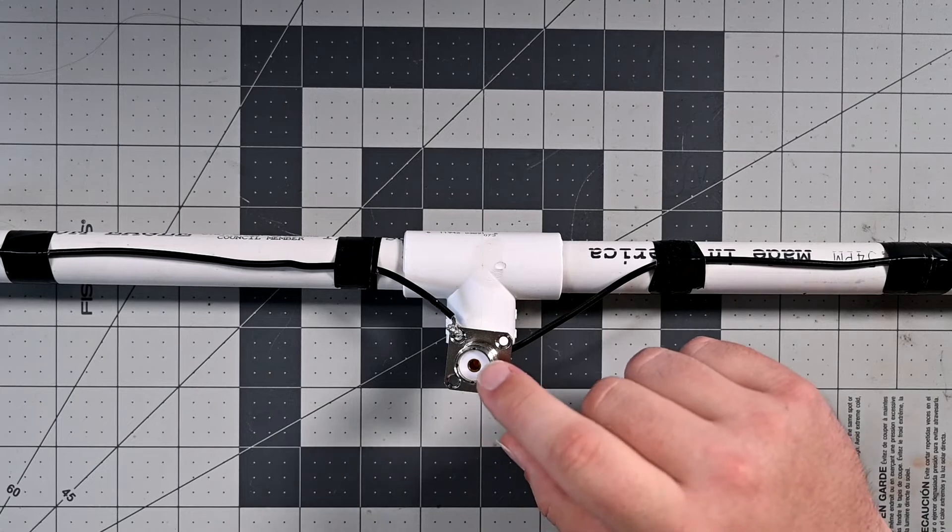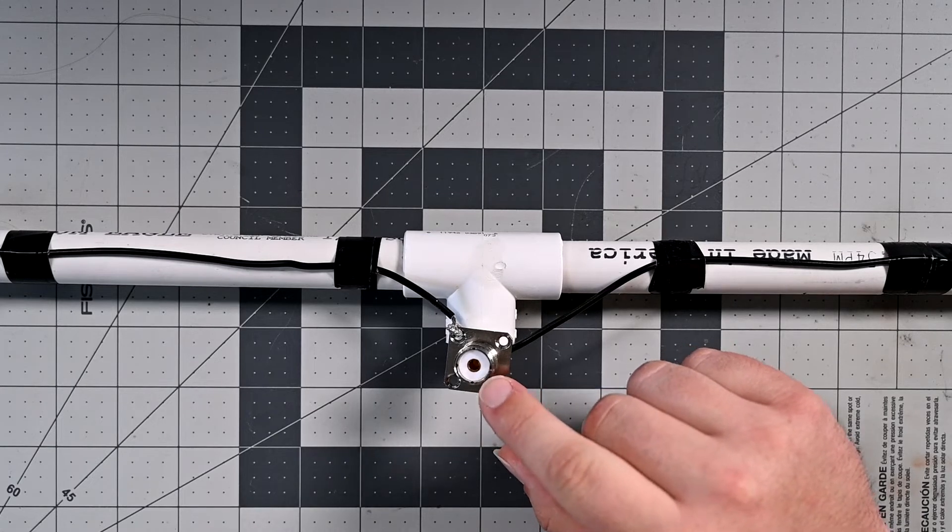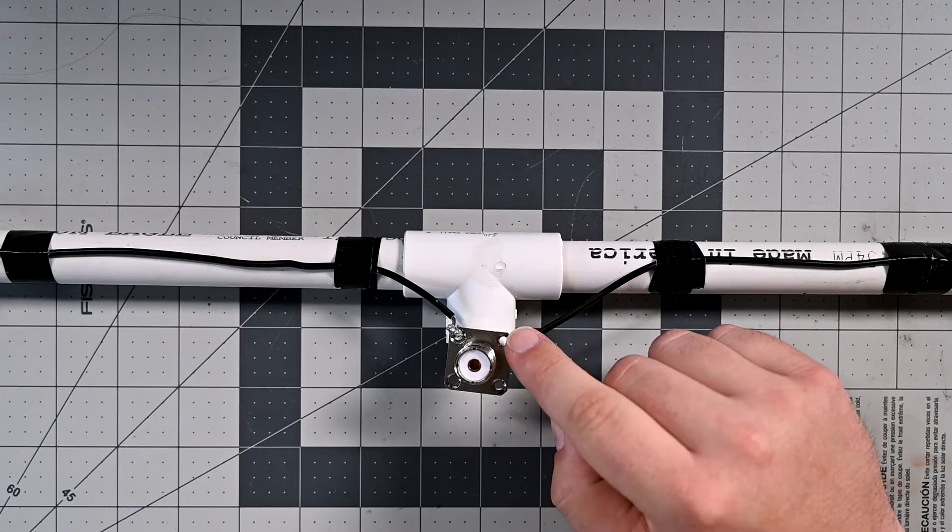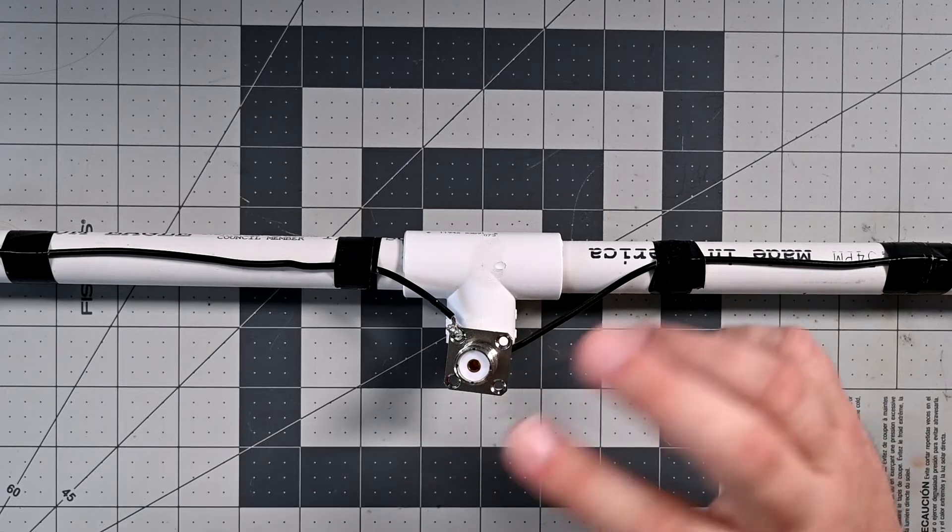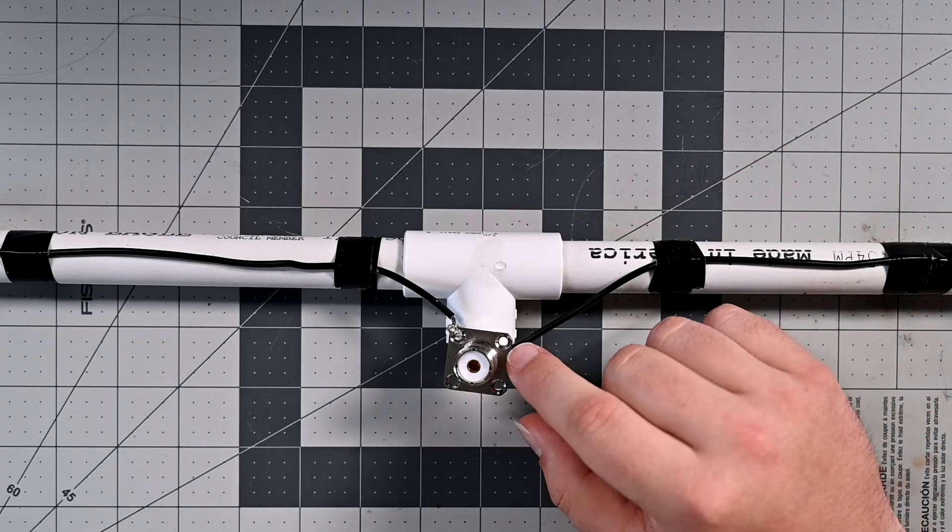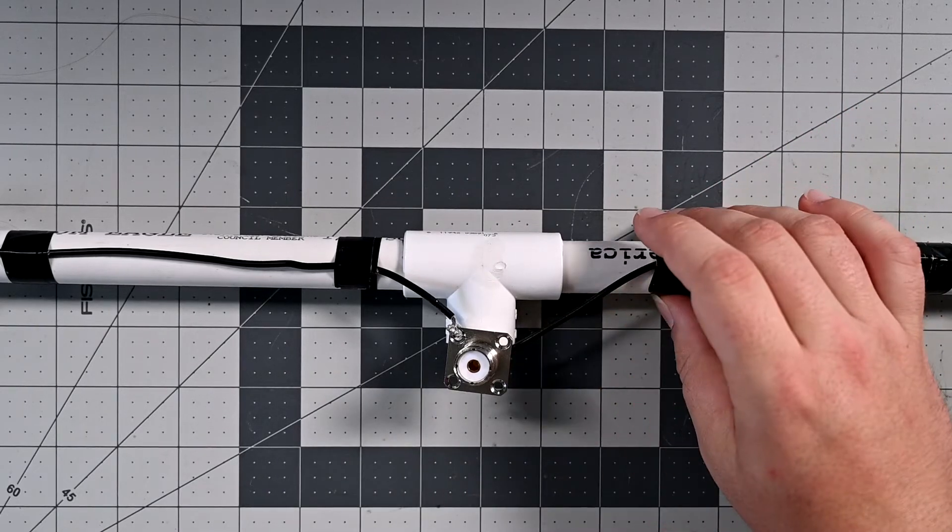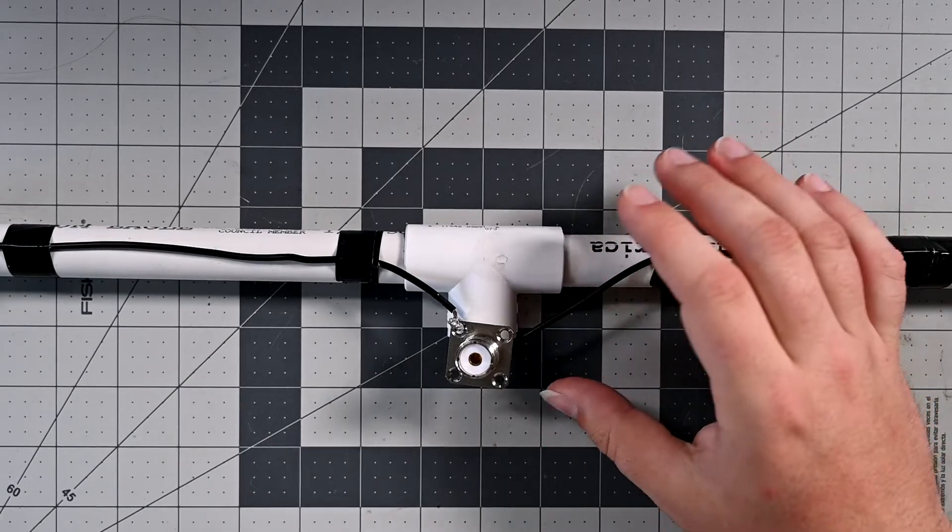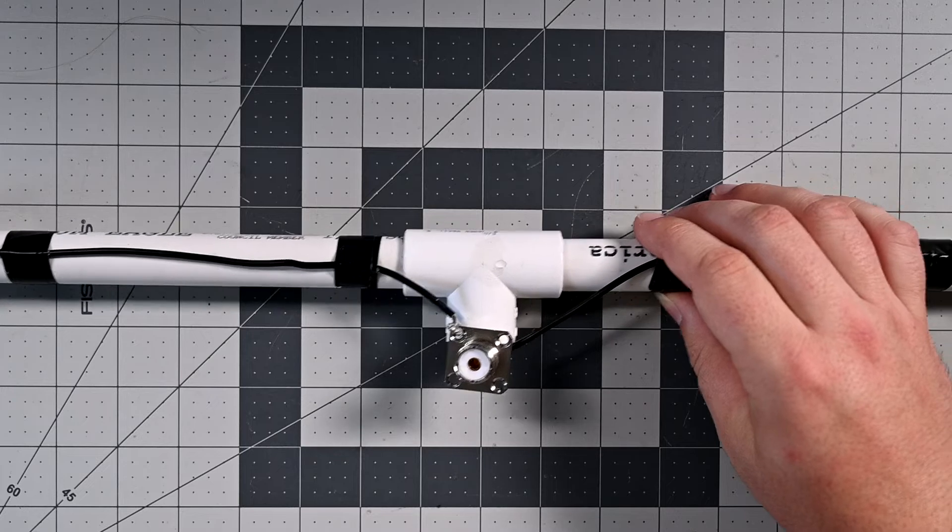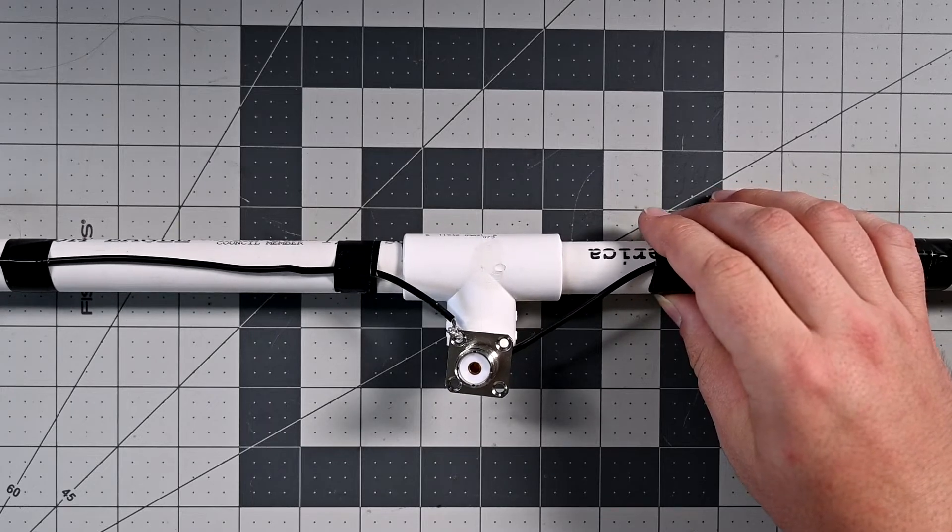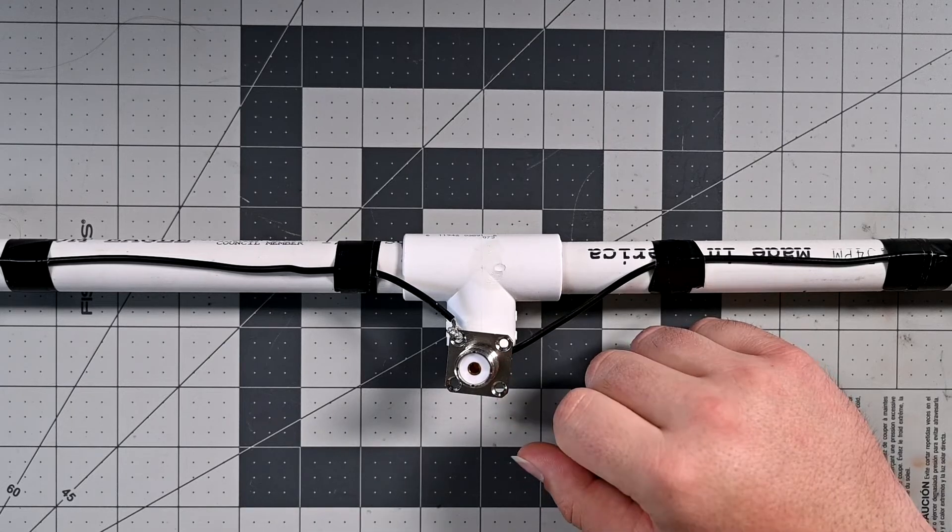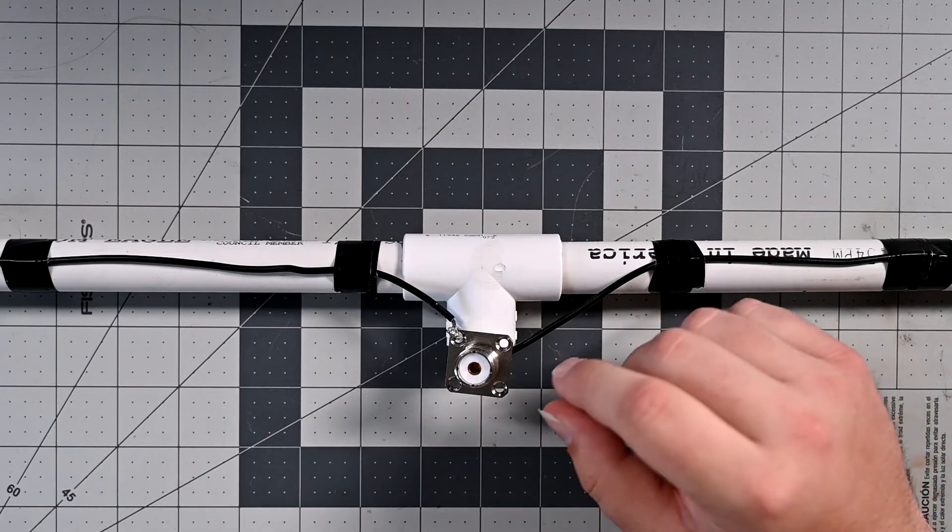Then I bought a SO239 connector, sometimes these are called HF connectors. This is the chassis mount one. If you look on Amazon, I'll try to put links to everything in the bottom so you can do this yourself if you want to. Again, I'm not recommending to actually make this to use, especially in a case of an emergency or anything like that. But this is not a practical antenna but it is a fun hobby antenna. But anyway, SO239 connector with the chassis mount, I bought these off of Amazon, they come out at about two bucks a piece.